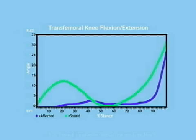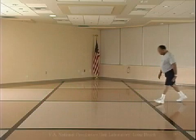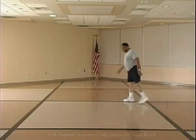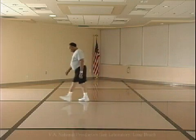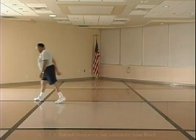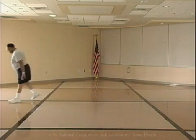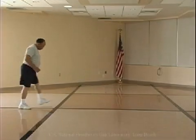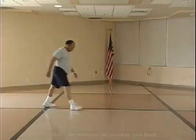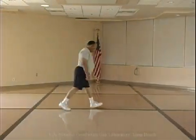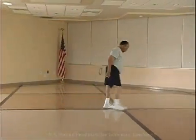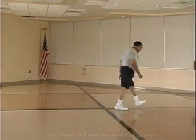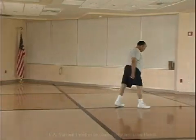Nearly all individuals with transfemoral amputations walk with reduced flexion of the knee compared to individuals without an amputation. The goal at minimum is to prevent inappropriate hyperextension. It may occur as a result of a forefoot lever arm that is too short.